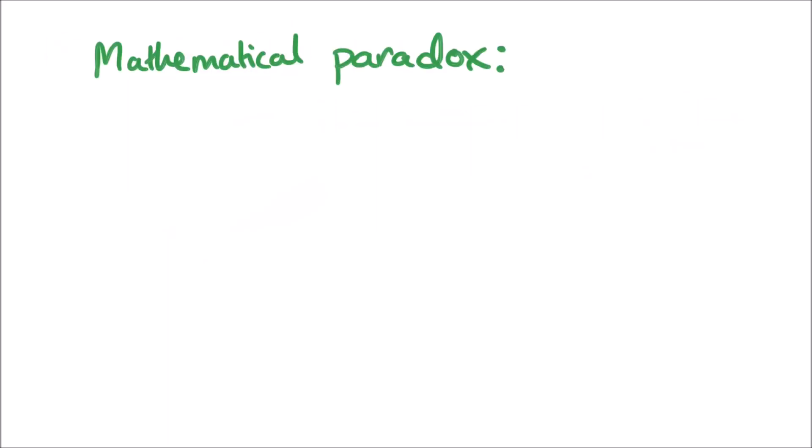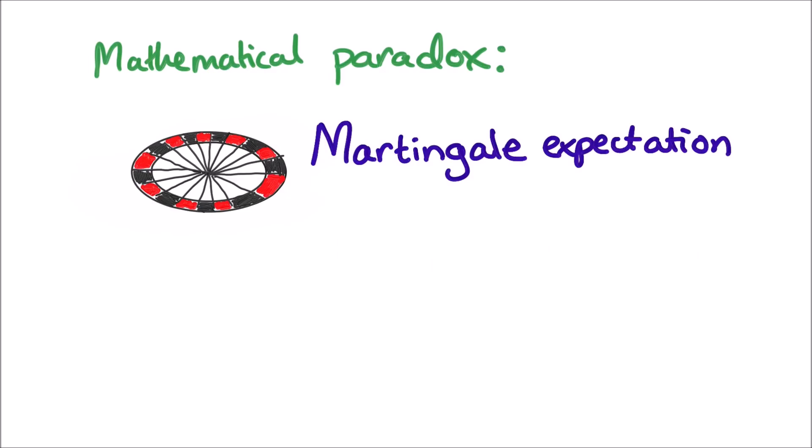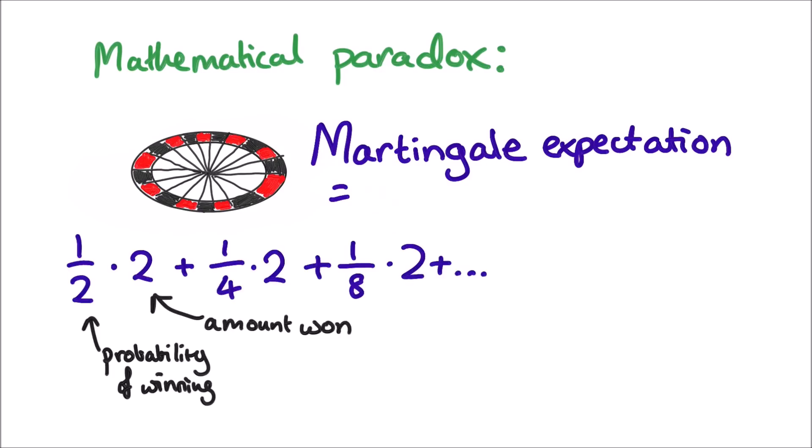So this is the paradox for me mathematically. This random red or black game should have expectation zero. You just feel like that must be true. There's no way on average to make money from a game of complete chance, but what's the expectation of the martingale? Well it's two. You will always win two, or using the mathematical formula we can see the same thing.